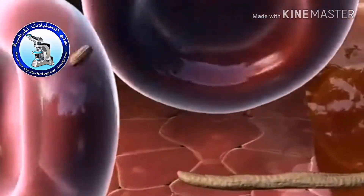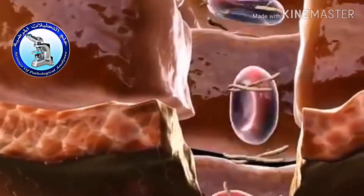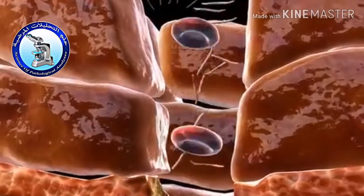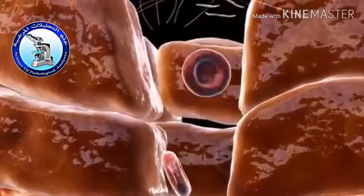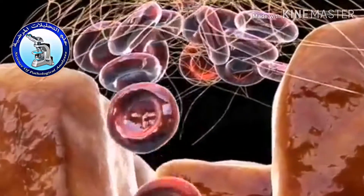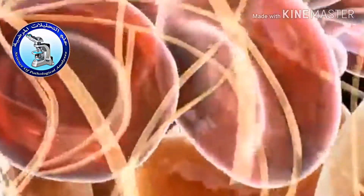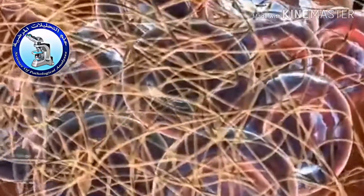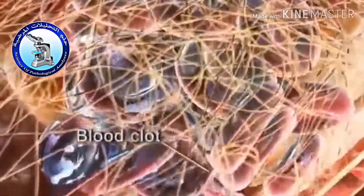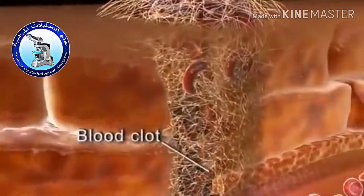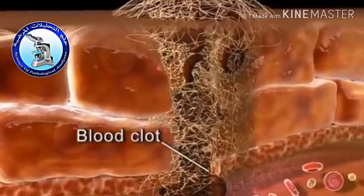These fibrin travel towards the damaged area. The thread-like fibrin forms a mesh, and the RBCs get caught and remain entangled. These RBCs and fibrin threads together form the blood clot. This clot manages to plug the gap in the ruptured artery and thus prevents further blood loss.